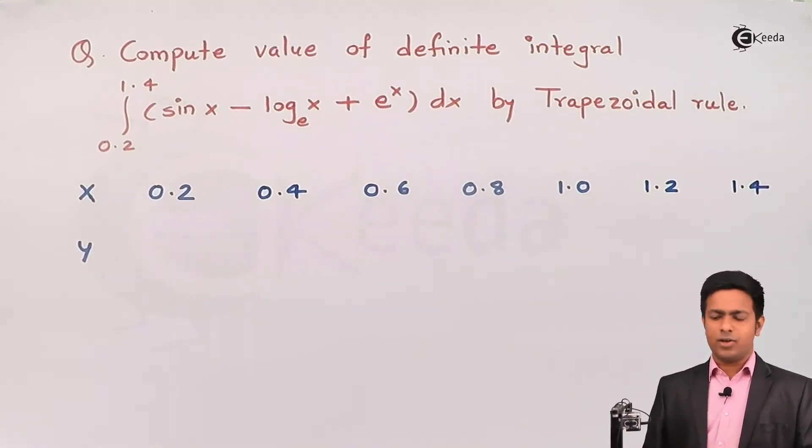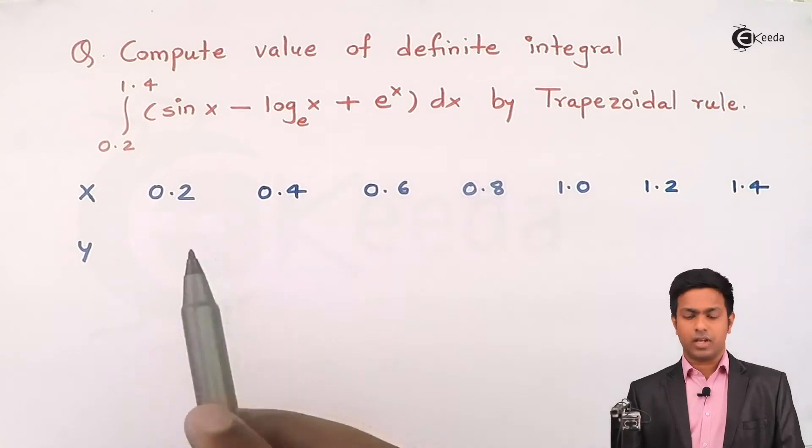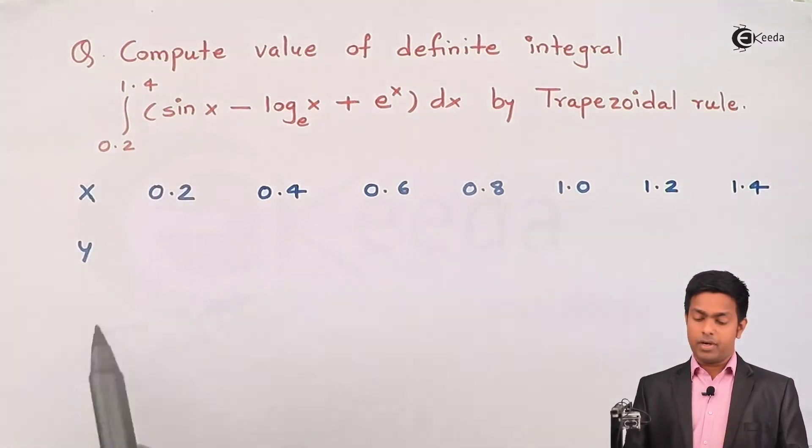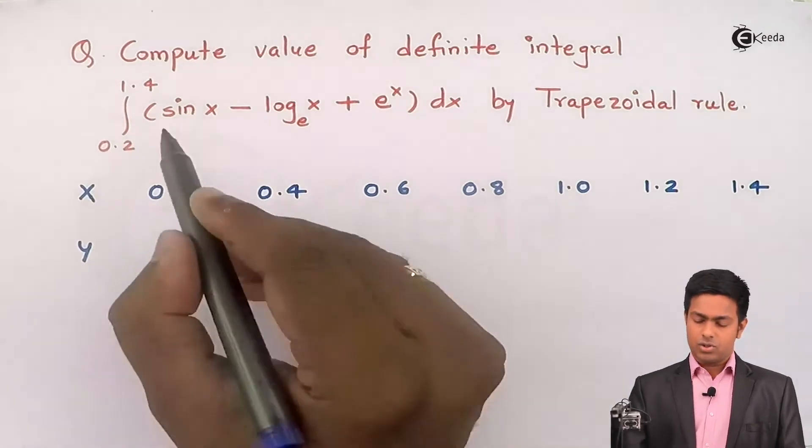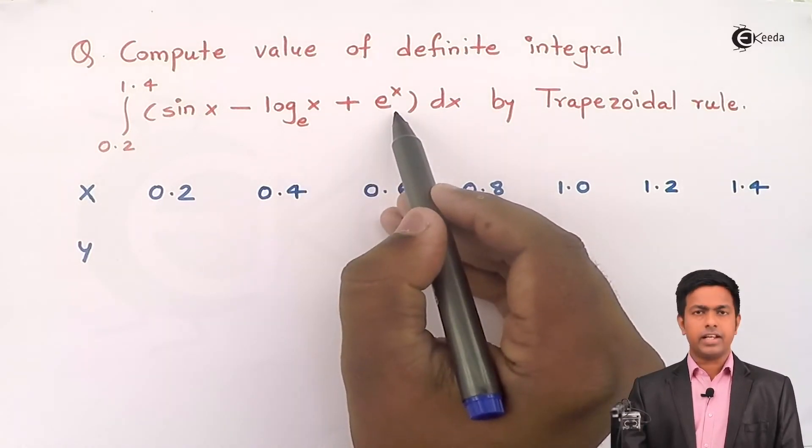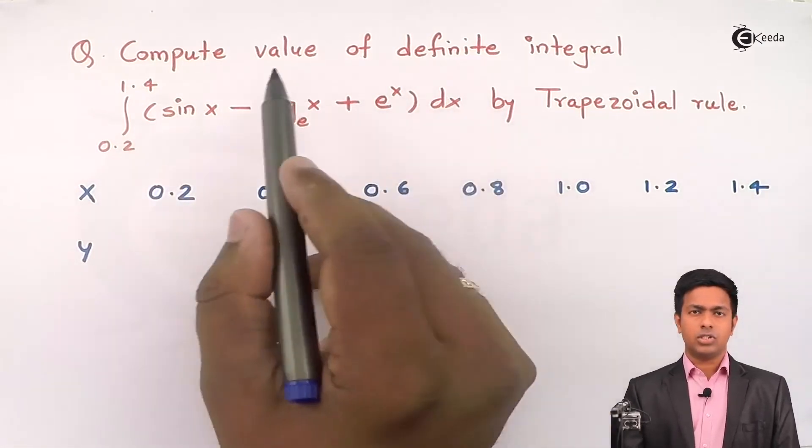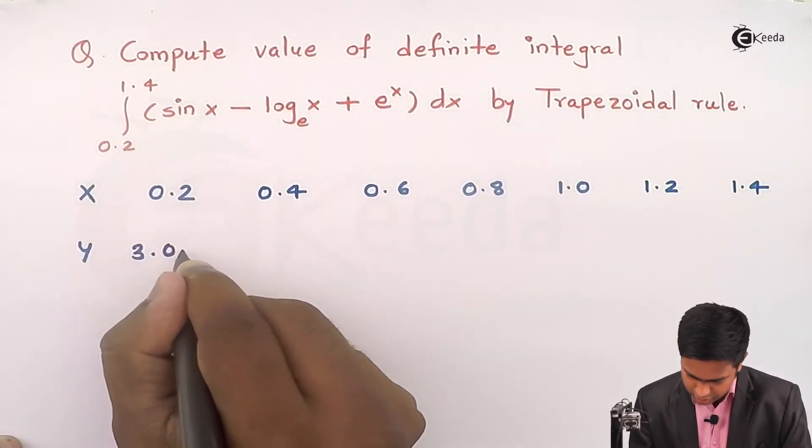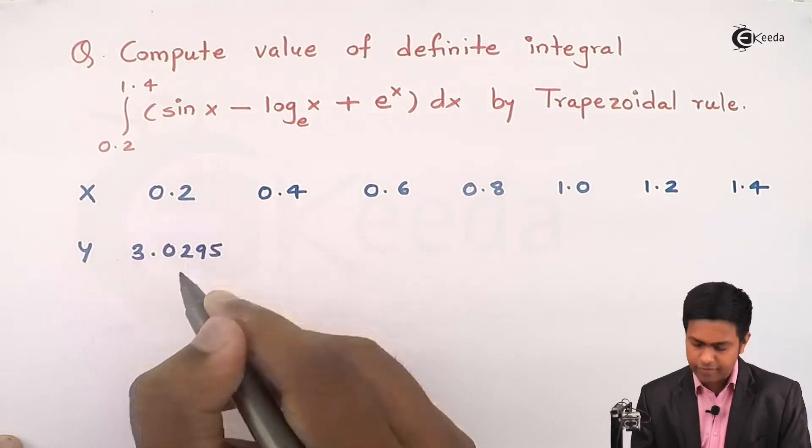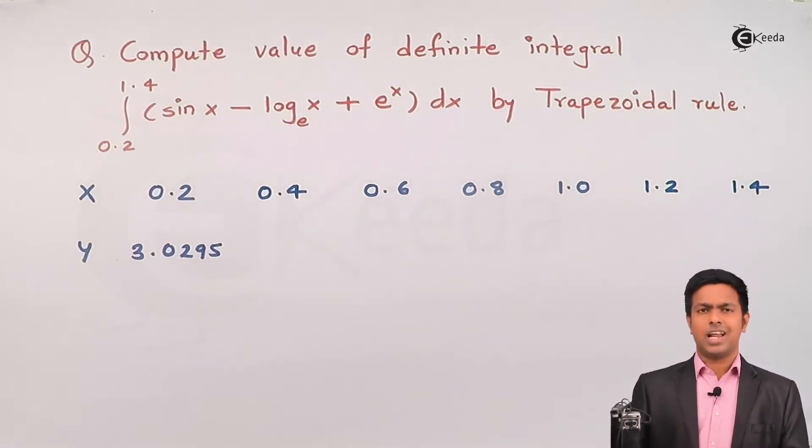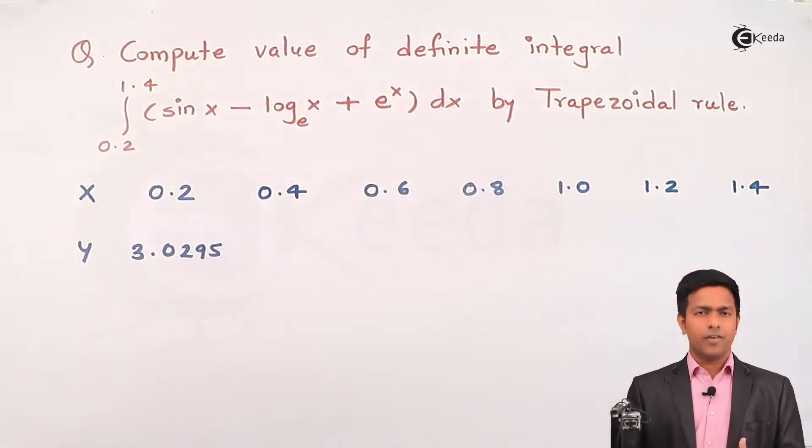Now for each and every value we'll find out the value of function. So to get the value of function at 0.2, take your calculator and enter sin of 0.2, but remember this value must be in radians. So sin of 0.2 minus log of 0.2 to the base e plus e raised to 0.2. If you enter all these values and calculate, then you will get 3.0295. You can check your calculator if you're getting this value, then you are right. Now similarly we just have to change the value of x everywhere and put 0.4, 0.6, 0.8...